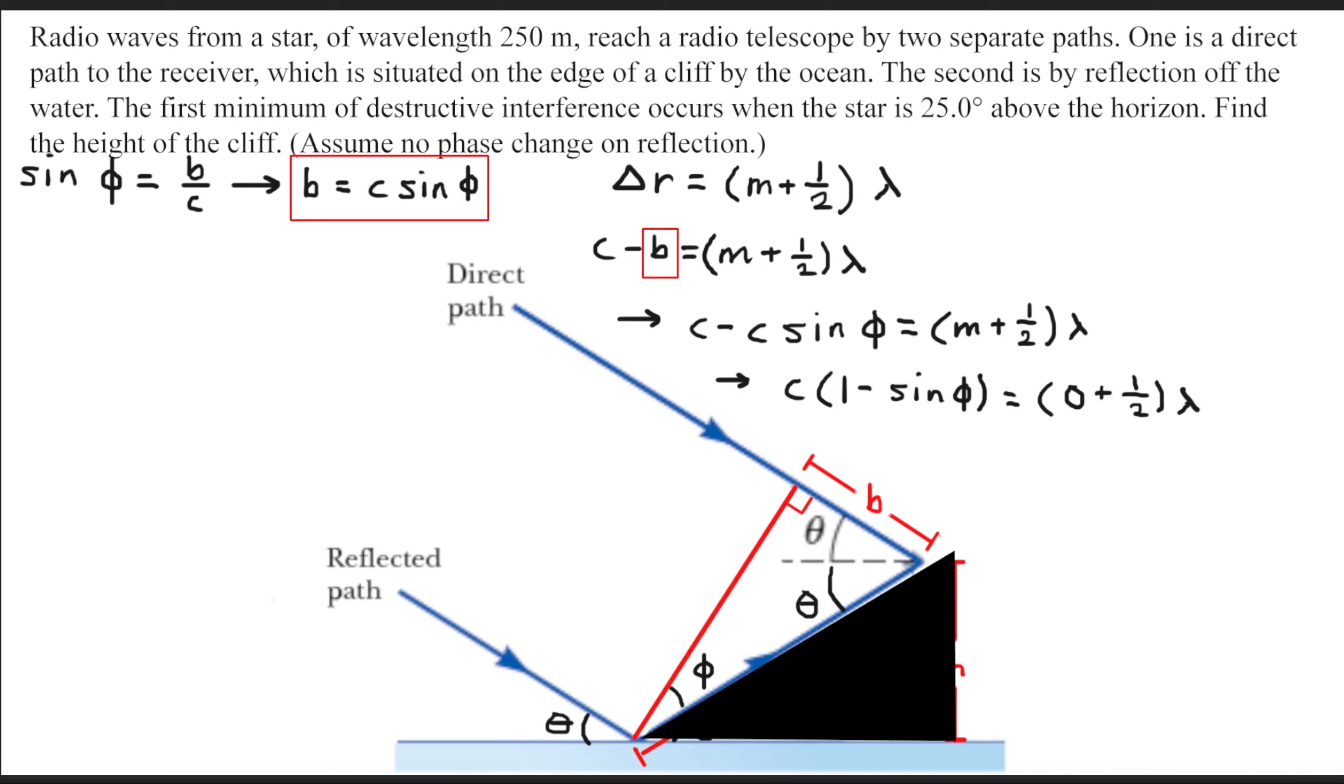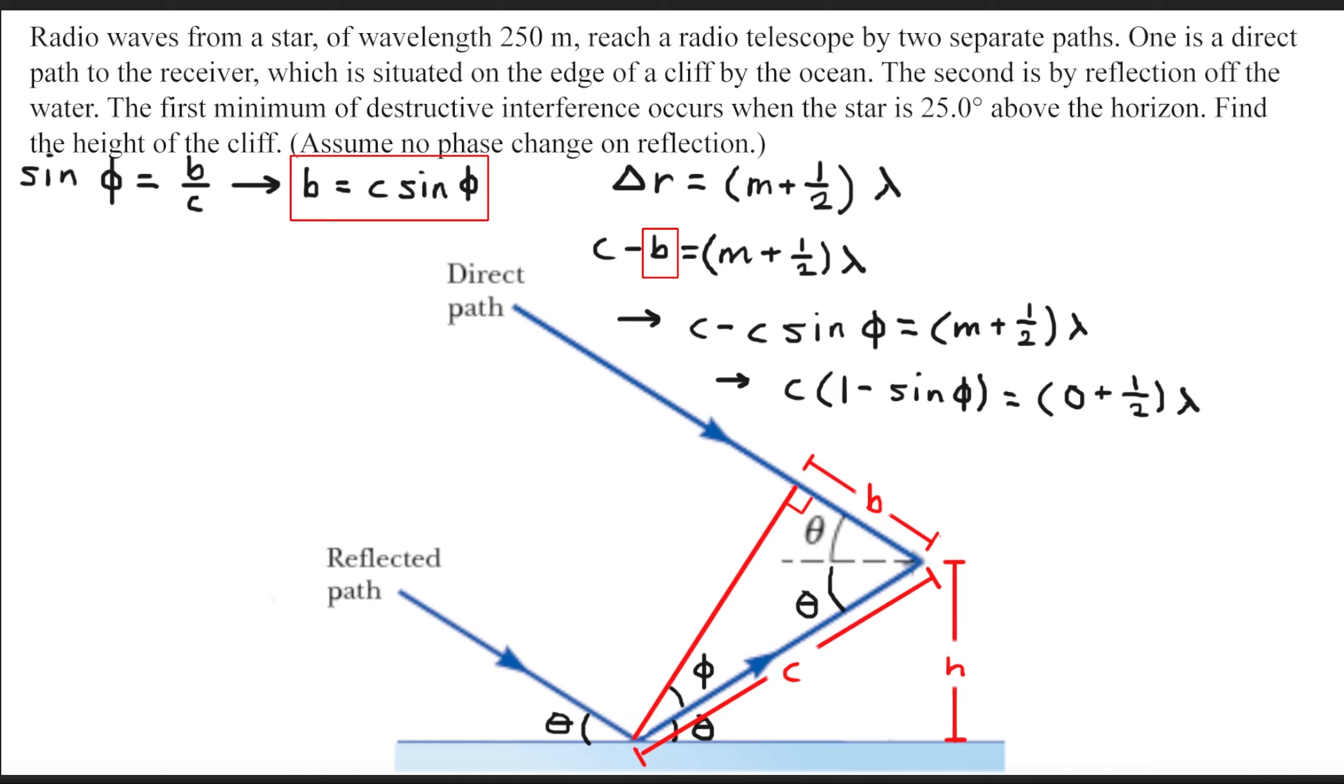Next, direct your attention to this black triangle right over here. What we need to do now is solve for the sine of the angle theta. We get that sine of theta equals H over C. We can rearrange this and get that C equals H over sine of theta. With that newfound relationship, we can make a substitution and get that H over sine of theta times 1 minus sine of phi equals lambda divided by 2. We can rearrange this equation and solve for the height.